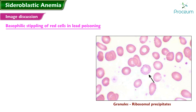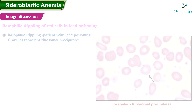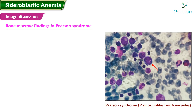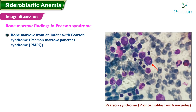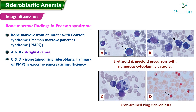Basophilic stippling of red cells in lead poisoning: peripheral blood smear shows basophilic stippling in several red cells from a patient with lead poisoning; the granules represent ribosomal precipitates. Bone marrow findings in Pearson syndrome: the images show findings on the bone marrow from an infant with Pearson syndrome, also called Pearson marrow-pancreas syndrome (PMPS). Panels A and B show Wright-Giemsa stain of erythroid and myeloid precursors with numerous cytoplasmic vacuoles. Panels C and D show iron stain ring sideroblasts.